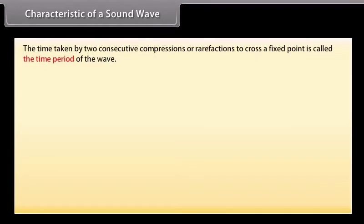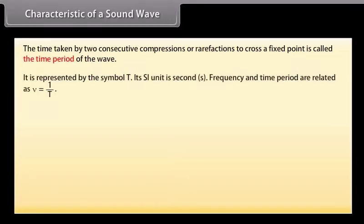The time taken by two consecutive compressions or rarefactions to cross a fixed point is called the time period of the wave. It is represented by the symbol T. Its SI unit is second. Frequency and time period are related as nu is equal to one upon T.